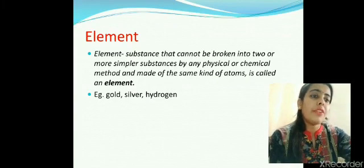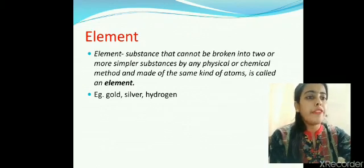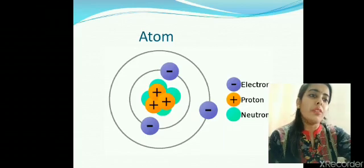If I talk of silver, pure silver is made up of only silver atoms. If I talk of hydrogen gas, it is containing only one kind of atom, that is hydrogen atom. Now what is atom?